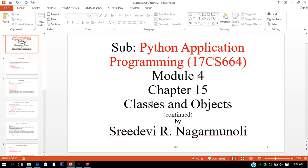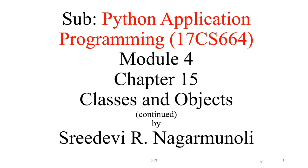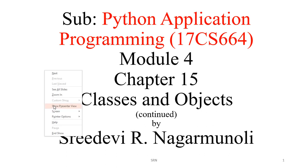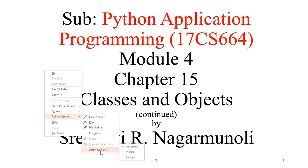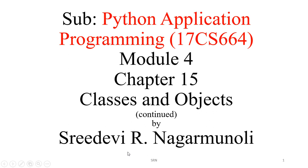Let's continue our study of Module 4, Chapter 15: Classes and Objects. In yesterday's class, we studied how to create an object, how to assign attributes and values, and we created an object point and assigned the attributes x and y to it.